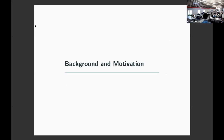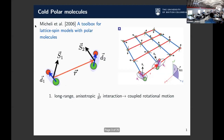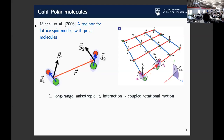Deep Gupta went into this a little bit, but there's been some interest in polar molecules as a platform for quantum simulation and also quantum information processing. To illustrate this idea, I'll show a slide with one particular example — a proposal by Michele Brennan and Zoller from 2006, talking about a toolbox for lattice spin models with polar molecules.